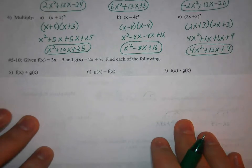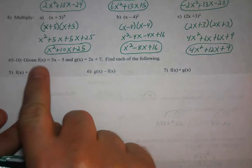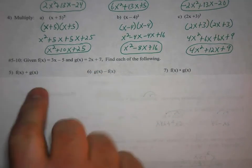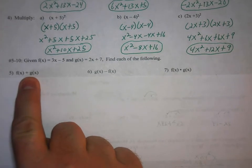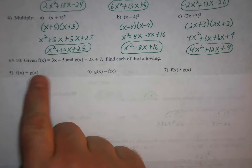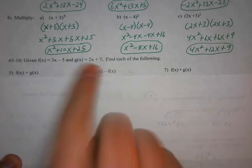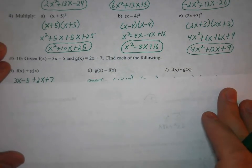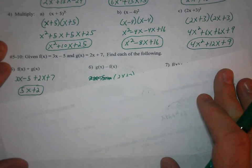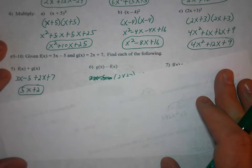And then at the very end, 5 through 10, I give you two functions, f of x and g of x. And I want you to find f of x plus g of x. Well, that means you're taking those two polynomials and adding them together. So that's just a matter of combining like terms. So you get 5x plus 2.